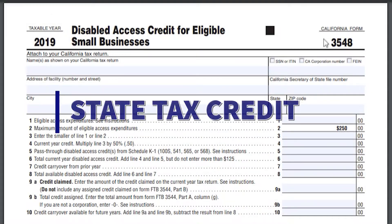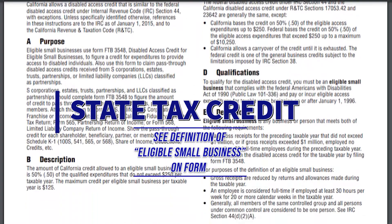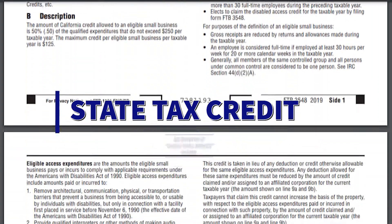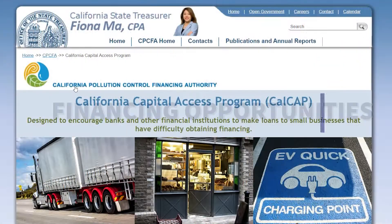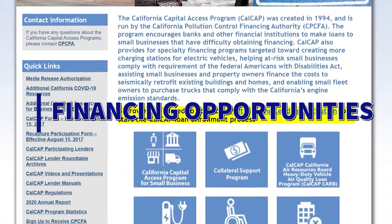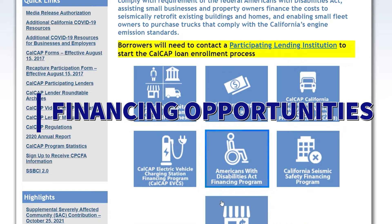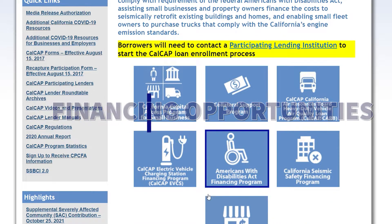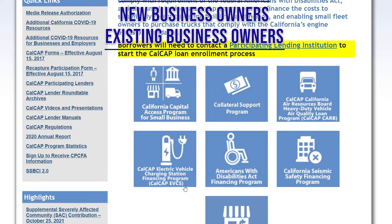Eligible small businesses can also take advantage of tax credits for ADA improvements through the California Franchise Tax Board. And through the California State Treasurer, eligible small businesses can take advantage of financing programs for Americans with Disabilities Act improvements, amongst other funding opportunities. So whether you are a new or existing business owner, you can take advantage of these incentives — so check them out.